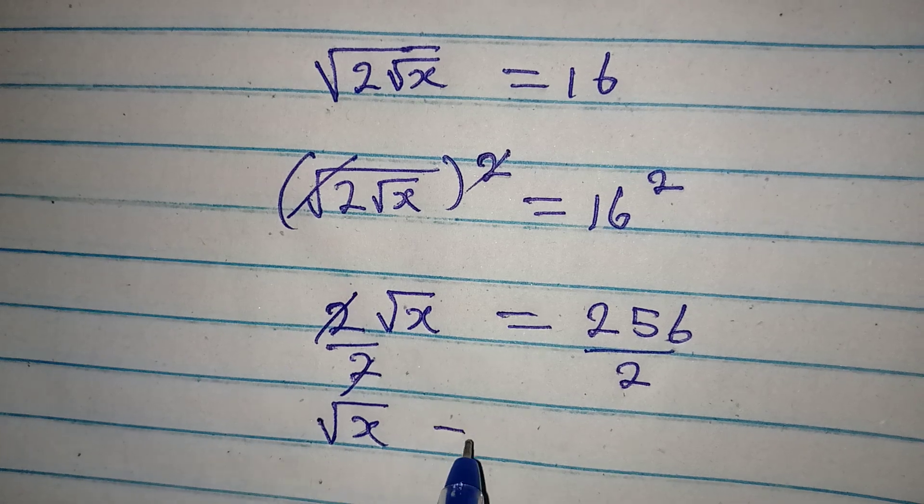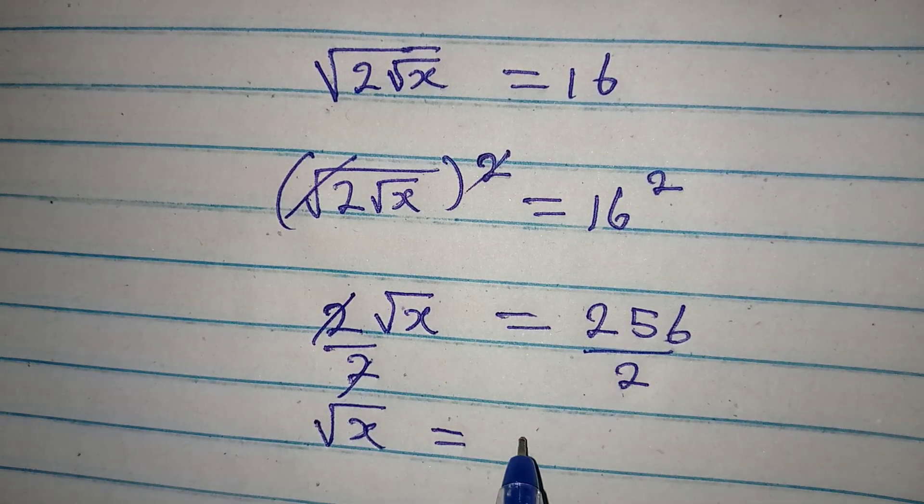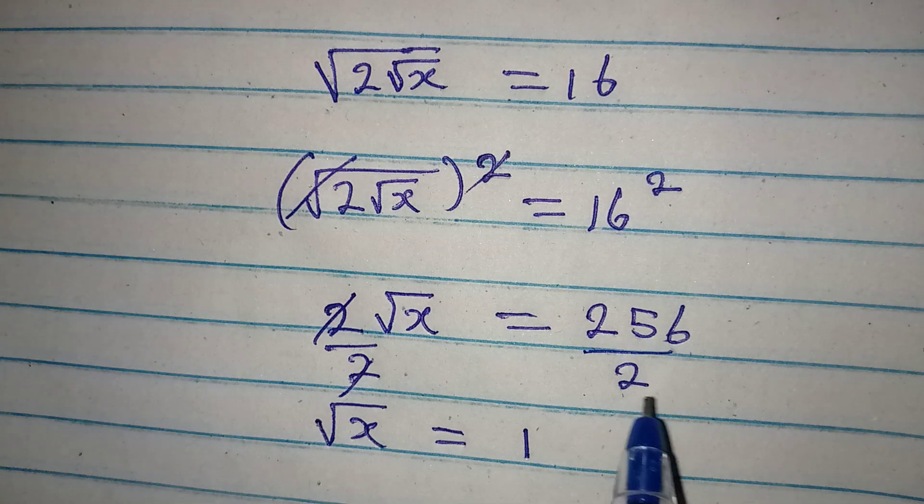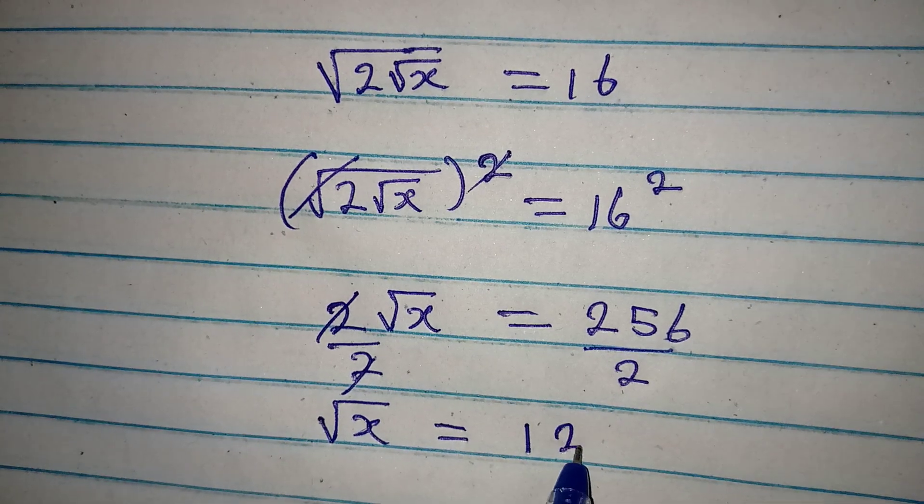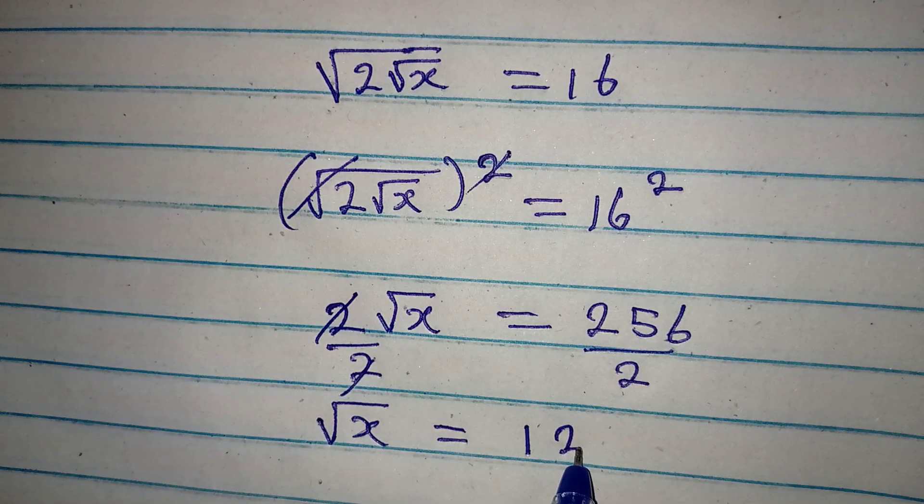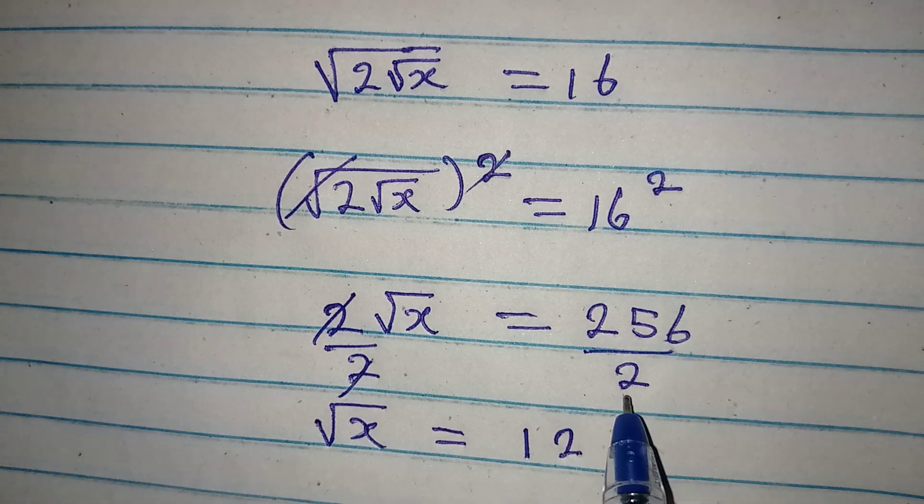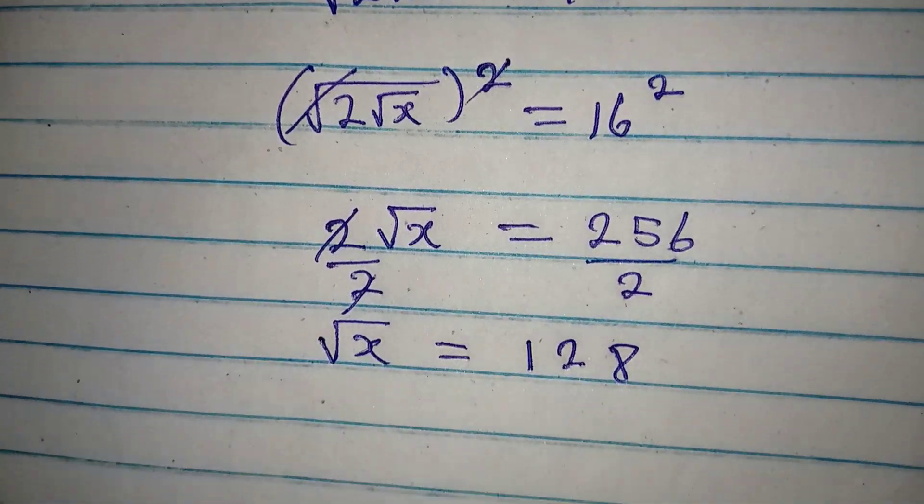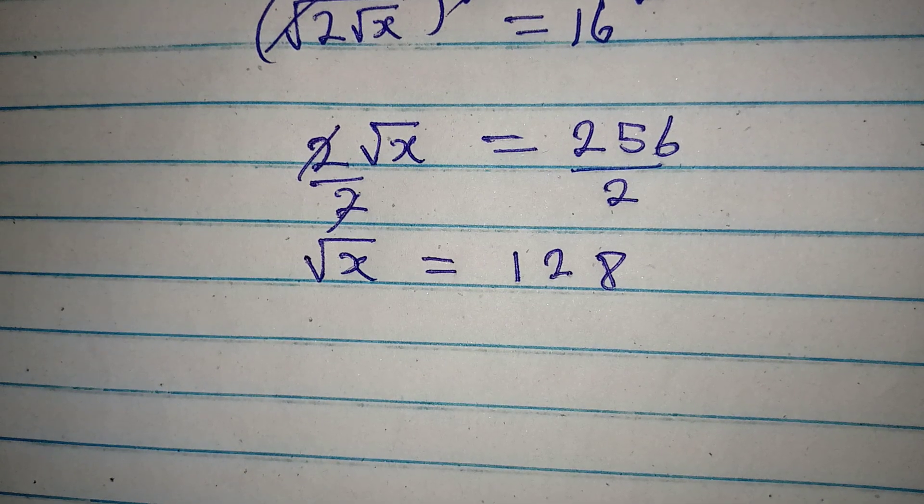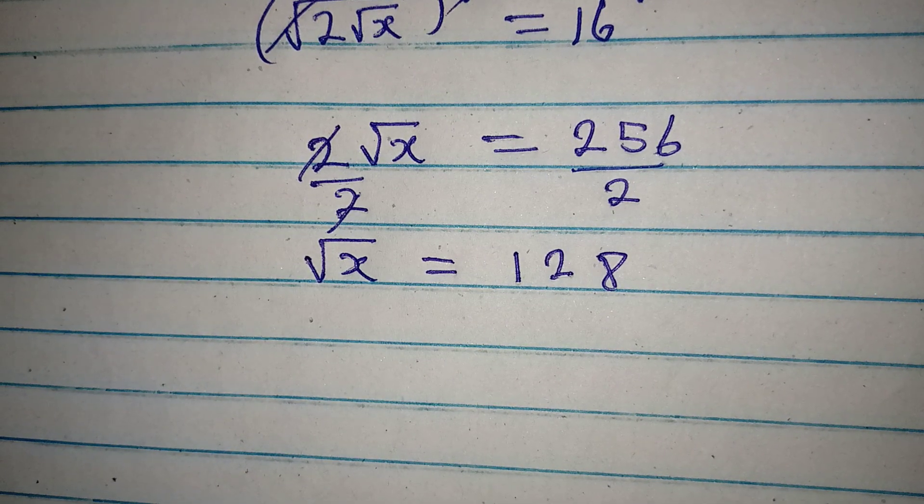2 divided by 2 is 1, 5 divided by 2 will be 2 remaining that 1, making this 16. 16 divided by 2 will give 8, so from here again we are to take the square, I mean square both sides.